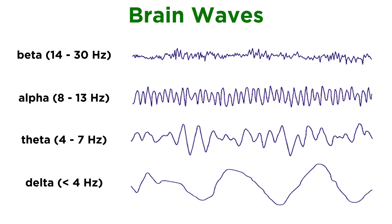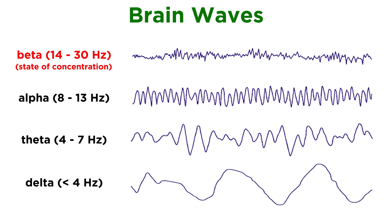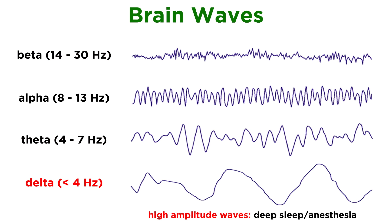Looking at the following data, we can first identify alpha waves. These are waves of a frequency of around 8 to 13 hertz, which means cycles per second. Beta waves fall at around 14 to 30 hertz. Theta waves fall at around 4 to 7 hertz. And delta waves are those around 4 hertz or less. These are high amplitude waves associated with a state of deep sleep, or being under anesthesia.